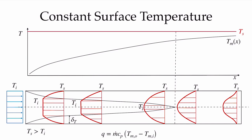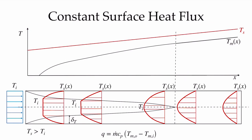With a constant surface temperature, we get a logarithmic increase of the mixed mean temperature as it exponentially approaches that constant surface temperature. We'll focus on the fully developed region and look at the energy balance, starting with the simpler case of constant heat flux. With constant heat flux, once we reach the fully developed condition, there is a constant difference between the mixed mean temperature and the surface temperature, and the mixed mean temperature increases linearly.